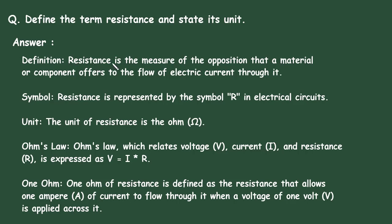Definition: Resistance is the measure of the opposition that a material or component offers to the flow of electric current through it. This is the definition of resistance - it is the opposition that a material or component offers to the flow of electric current through it.